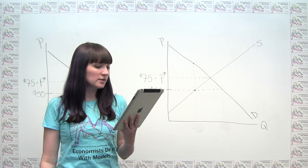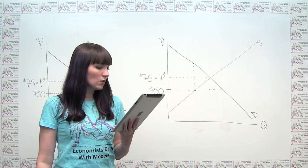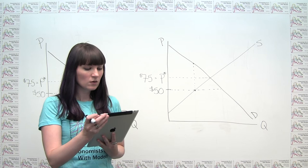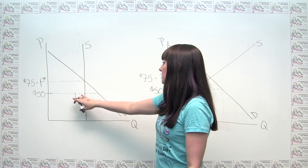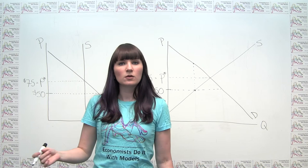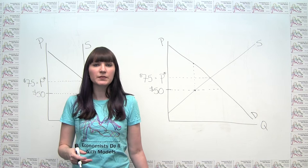Part C of the question says, suppose Pearl Jam really wanted to bring down ticket prices. Since the band controls the supply of its services, what do you recommend they do? Explain using a supply and demand diagram. Well, we can see here, and we've talked about before, that there are two ways that an equilibrium price, not a forced out-of-balance price, can be lowered. We can either decrease demand for our product, or we can increase the supply of the product.